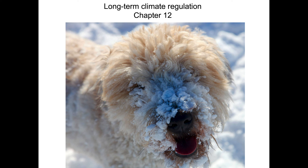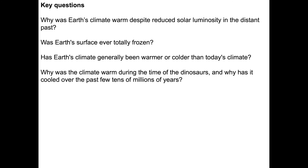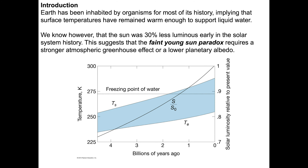Moving right along, now we're going to talk about long-term climate regulation. We'll be talking about a couple things in particular: why was Earth's climate warm despite reduced solar luminosity in the distant past? Was Earth's surface ever totally frozen? Has Earth's climate generally been warmer or colder than today's? Why was the climate warm during the time of dinosaurs, and why has it cooled over the past few tens of millions of years?